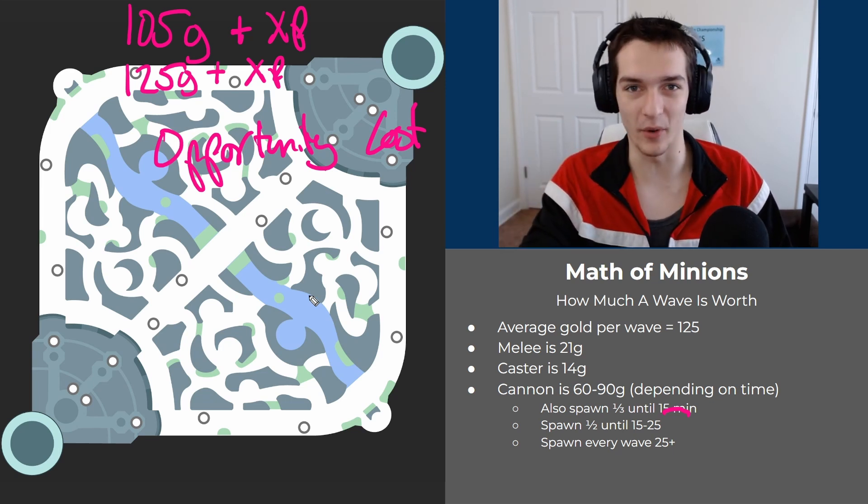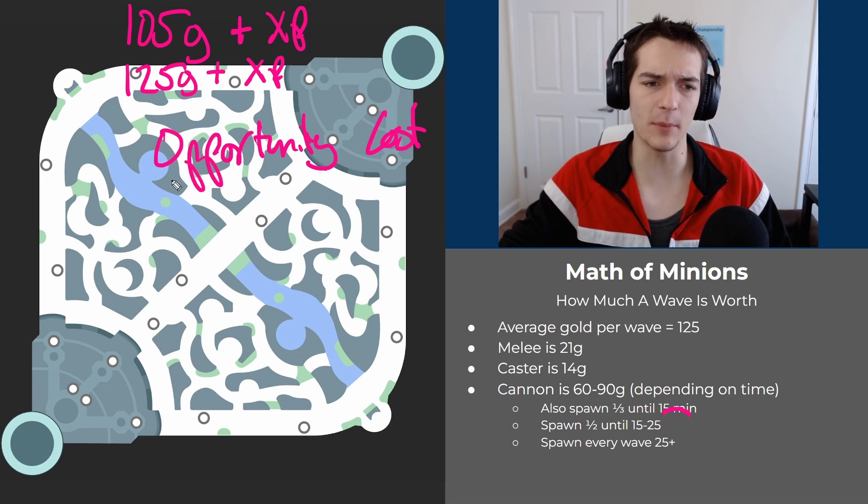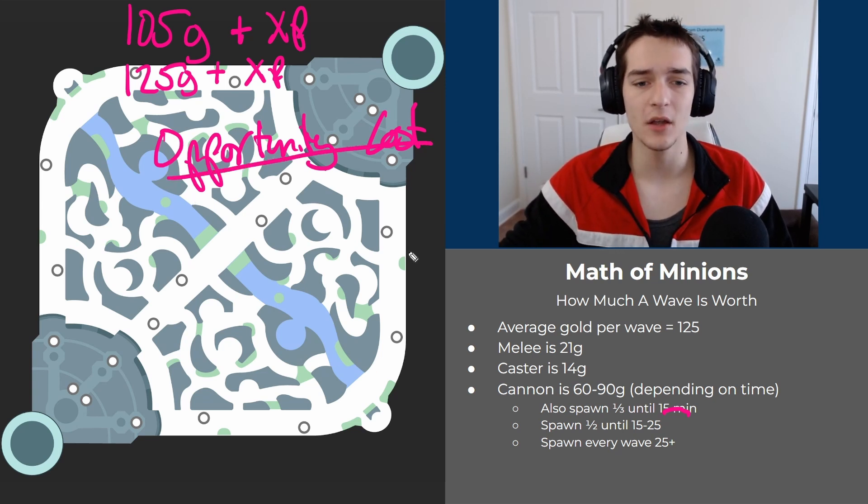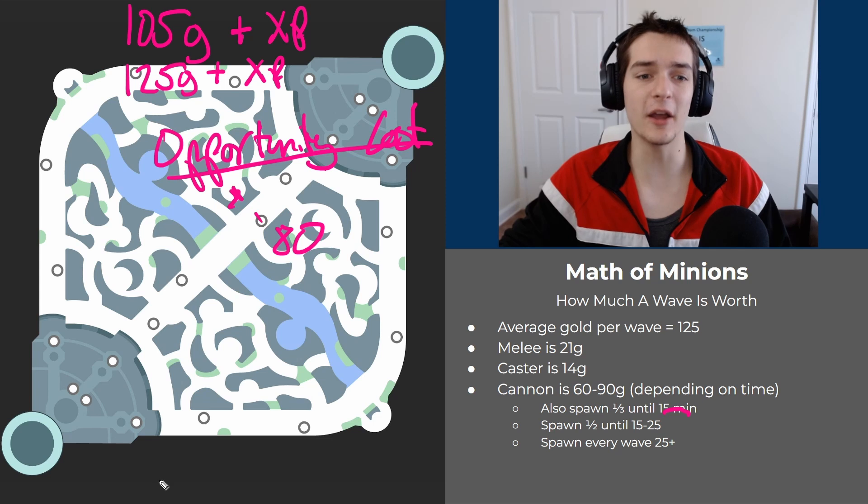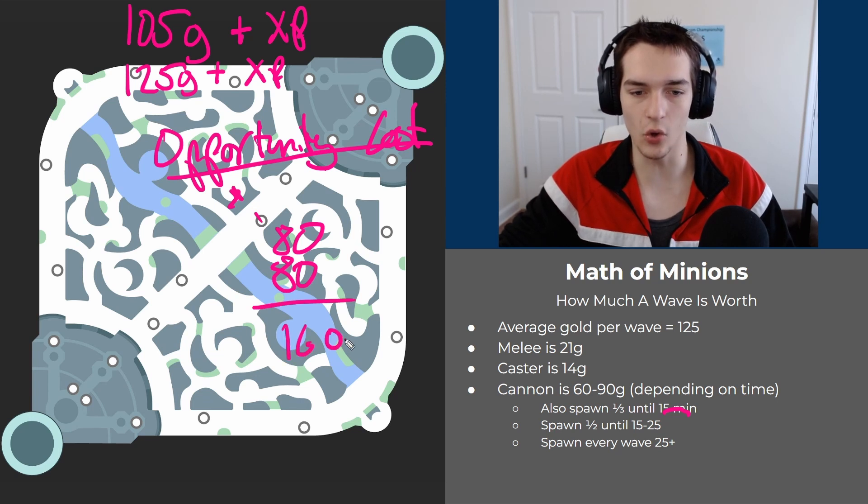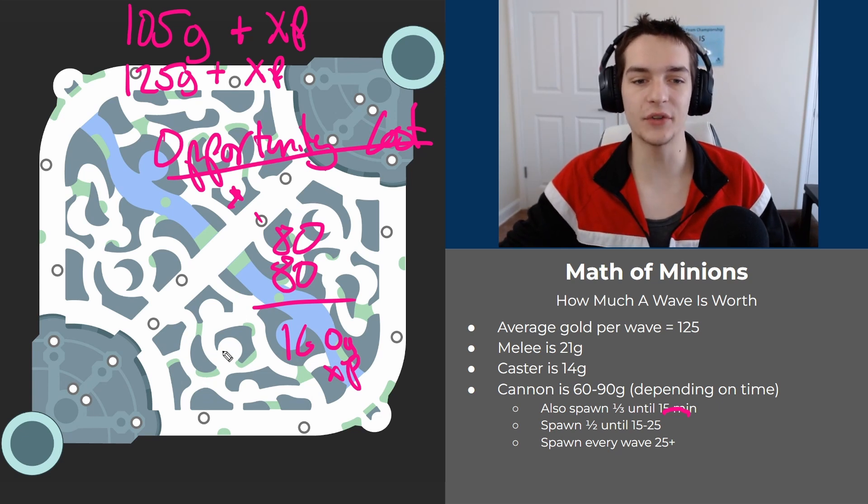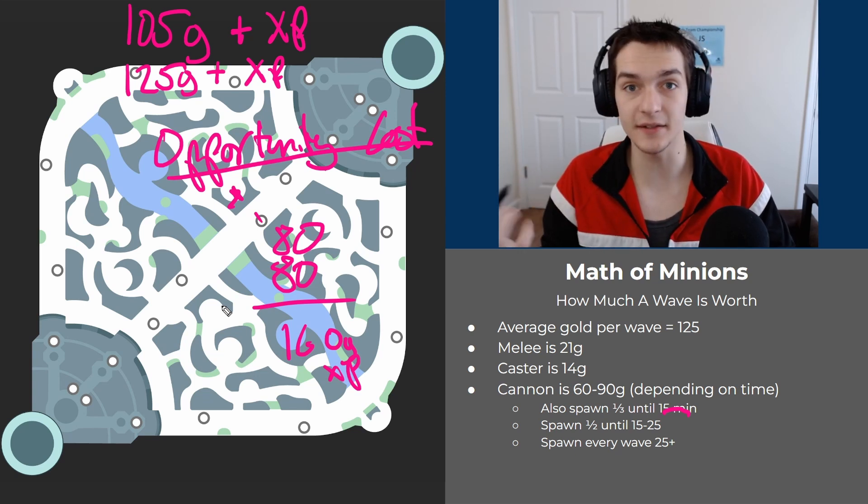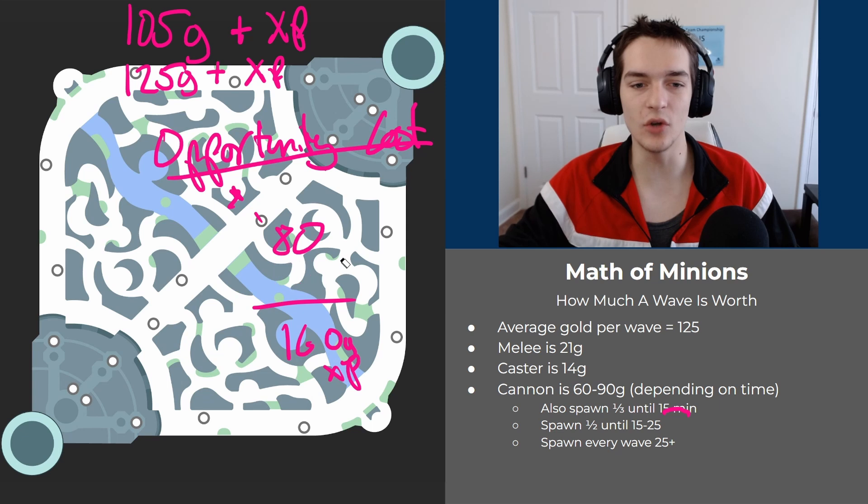This idea of opportunity cost you can apply to different parts of the game. Like a jungle camp - chickens are roughly 80 gold I think. If you take the enemies, you get 80 gold and deny them 80 gold plus the XP - that's like 160 gold plus XP. What's something else worth about 150 gold? An assist or a plate. So getting the enemy raptors is worth more than getting a plate or an assist.